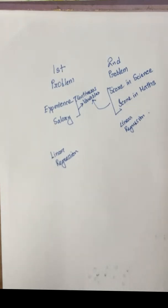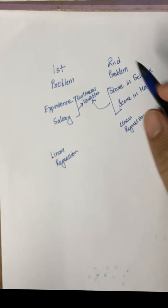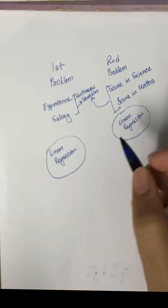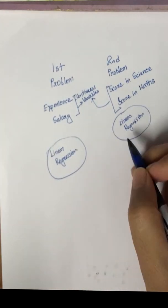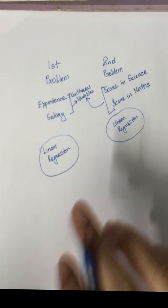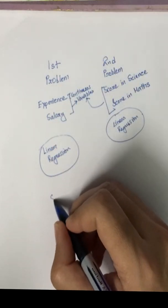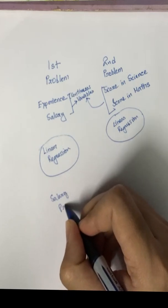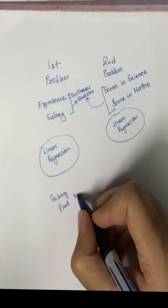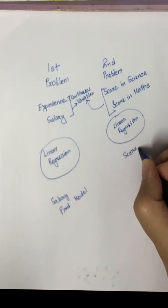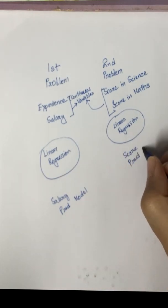So coming back to the topic of this video, what is the difference between a model and algorithm? In this context, the algorithm is linear regression. The algorithms are same for both the cases, but these are two different models because this one is a salary prediction model.